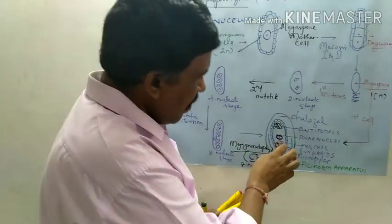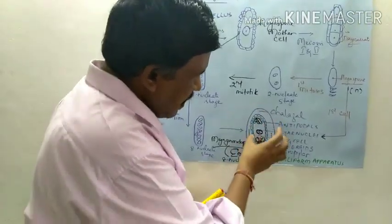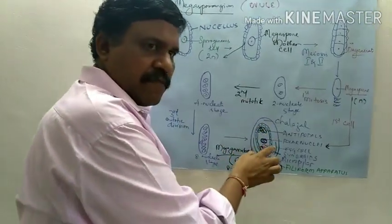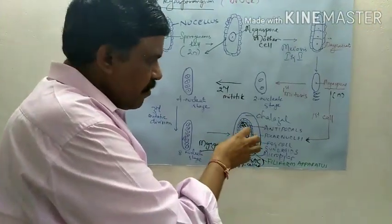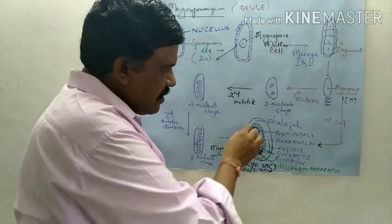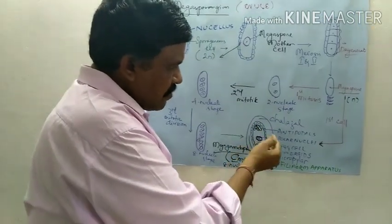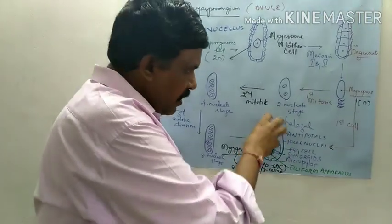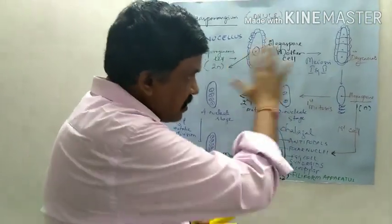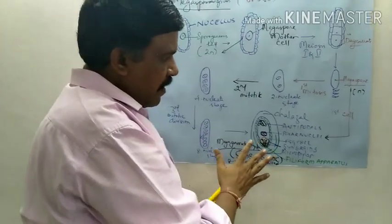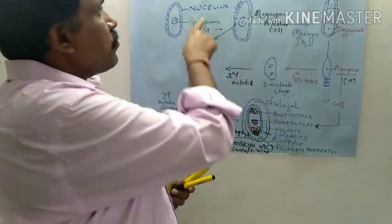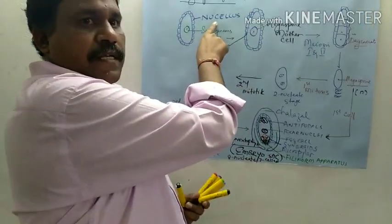This 8-nucleate stage is developed and arranged inside the sac-like structure inside the ovule. It has been supported by the nucellus tissue.